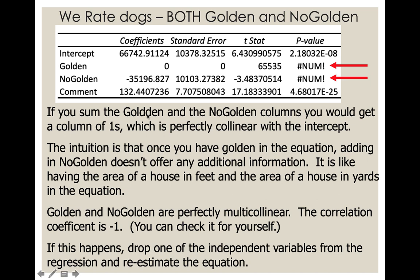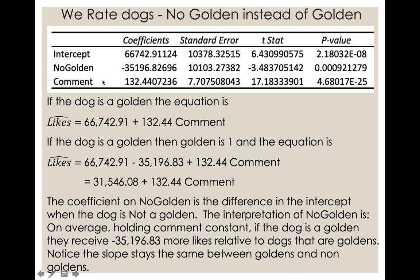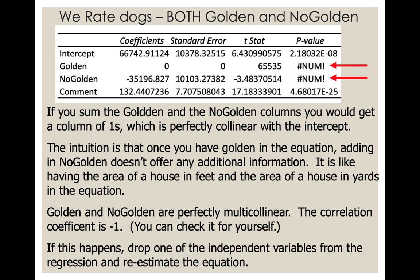Falling into the dummy variable trap also violates MLR assumption three — no perfect multicollinearity. You can see the implication: Excel gets mad at you and produces errors. If you get results like this, first do a head slap, then realize you fell into the dummy variable trap. The easy fix is to just drop one of the two variables and re-estimate the model. It's not a big deal if you fall into it, but it is a big deal if you don't dig yourself out.